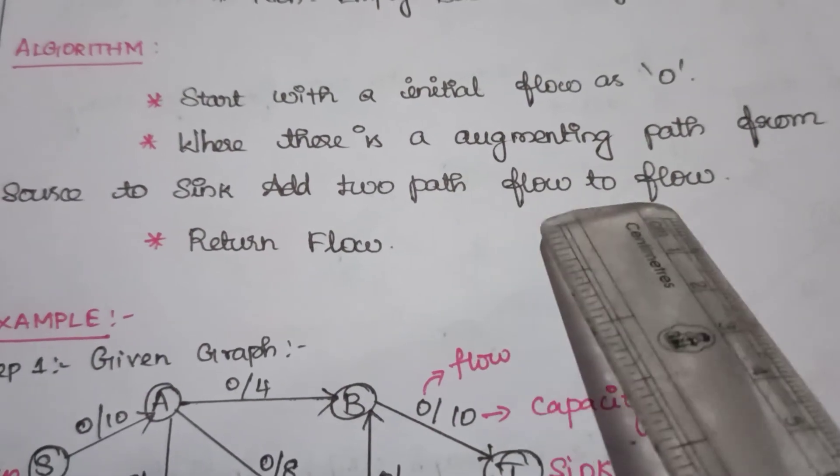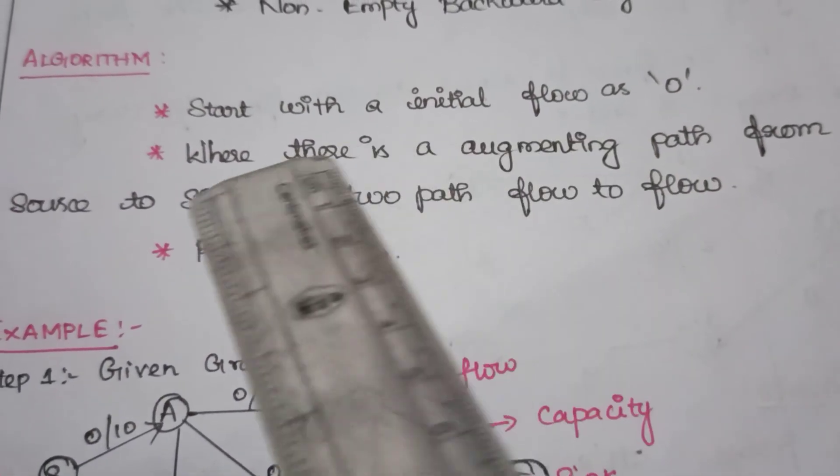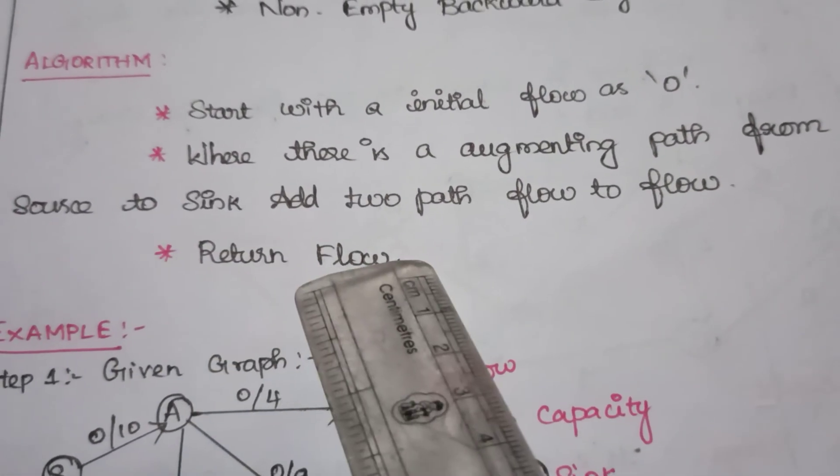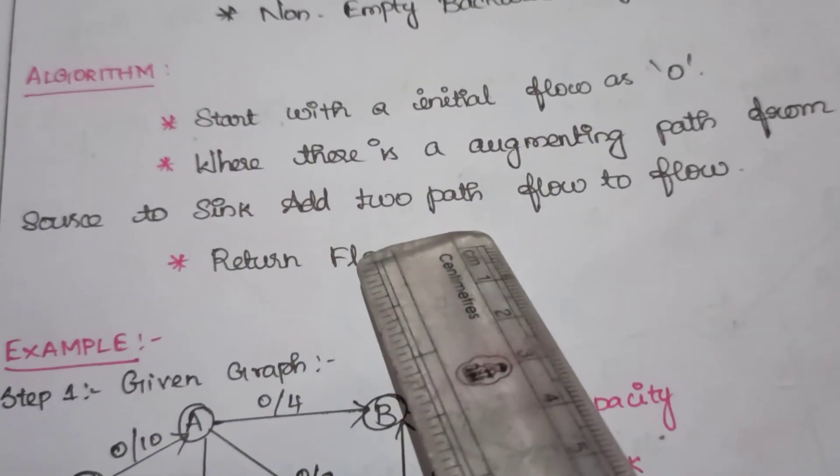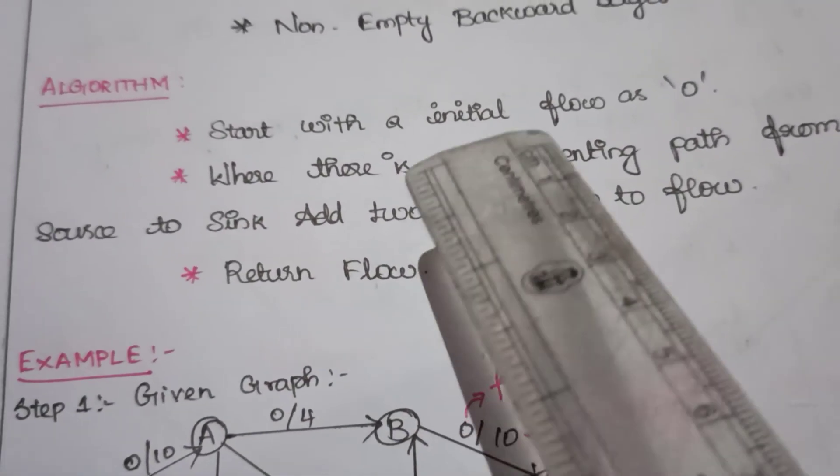Then return the flow. So the algorithm may be clear while I am explaining with an example.